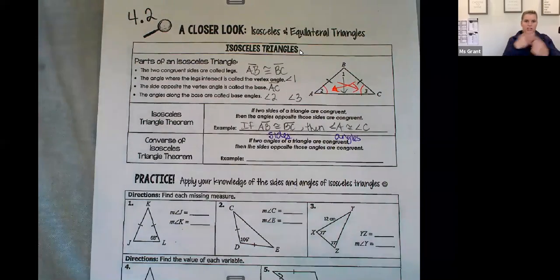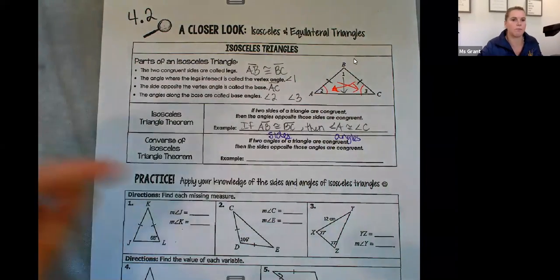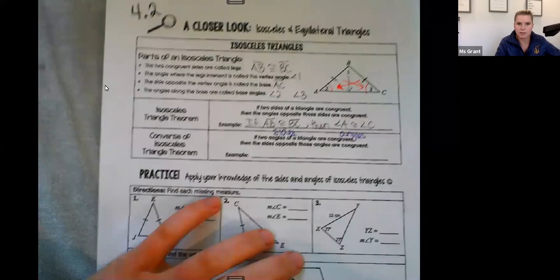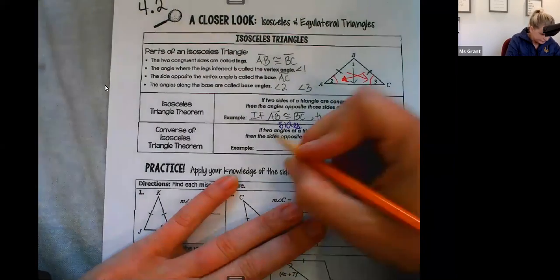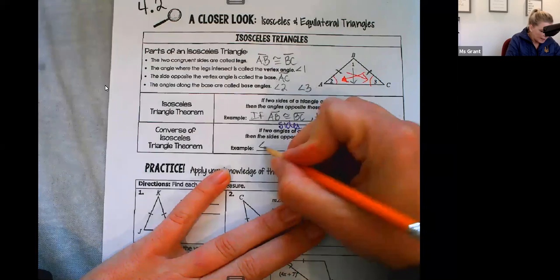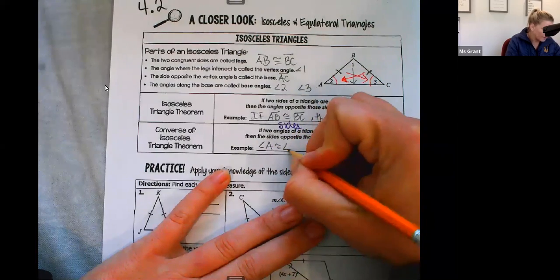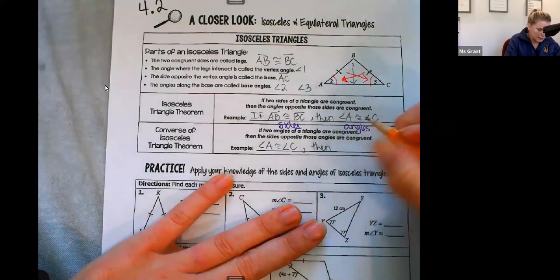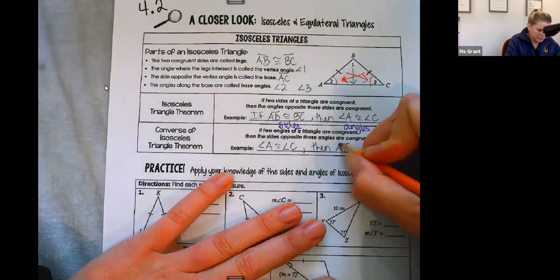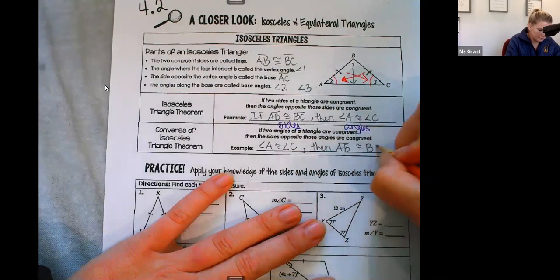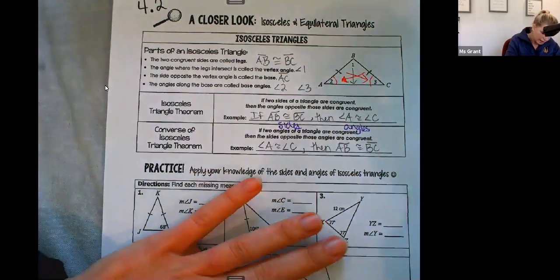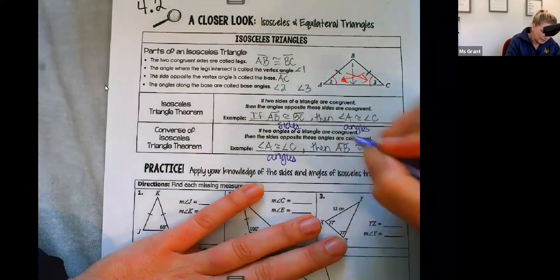The converse means it's just reversed. It's flipped. So that means I'm first going to have angle A is congruent to angle C, then AB is congruent to BC. Angles first, and then the sides.